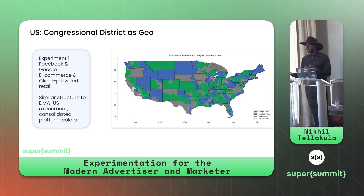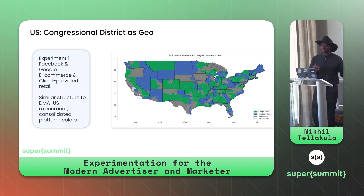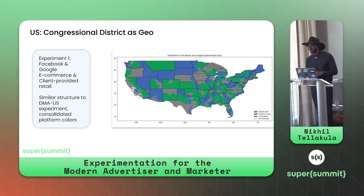This offline/online connection extends to car dealerships too — you're not going to split test on a single $100K Mercedes. Instead, we modeled foot traffic and asked: how engaging are these ads? For brick-and-mortar stores like a Mercedes dealership, you're not buying a car online — you walk into the dealership. So foot traffic is the right metric to measure ad effectiveness in those cases.